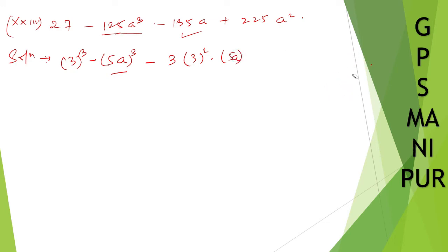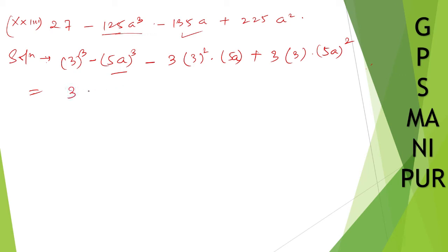And the last term, 225, you can write as thrice ab square: (5a) whole square gives 25a square, and 25×9 is 225. We have now expressed everything in the form a cube minus b cube minus thrice a square b plus thrice ab square, so I can write down the answer as (a − b) whole cube, which is (3 − 5a) whole cube. That's all.